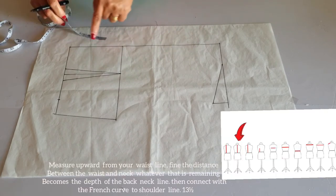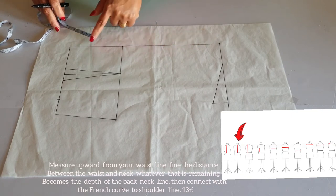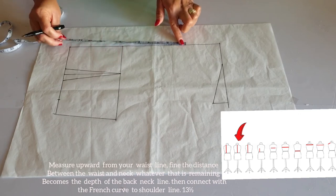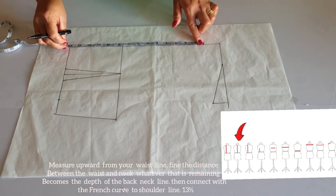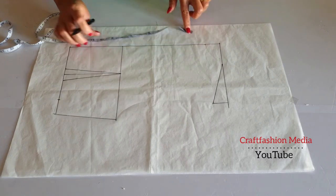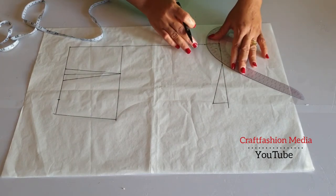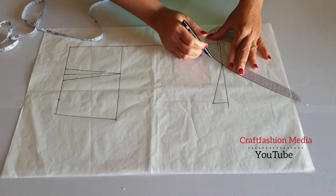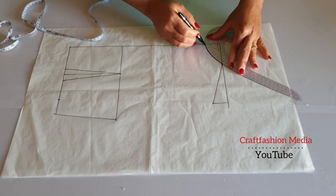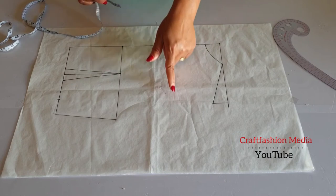Now coming to the back neckline, I'm going to measure upward from the waistline the distance from the neck to waist, which is 13 and a half inches, and I will make a mark.